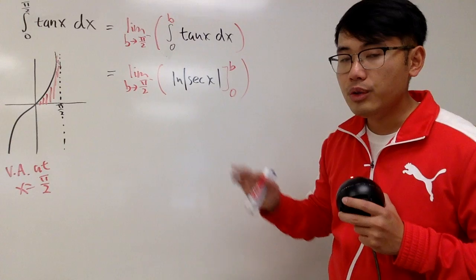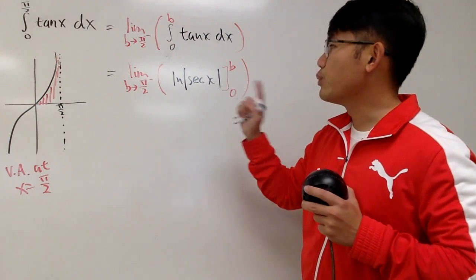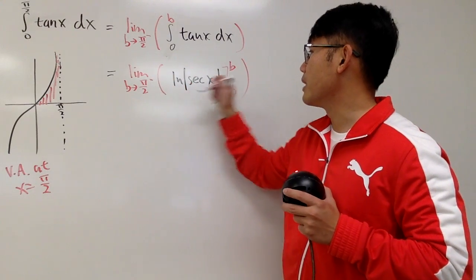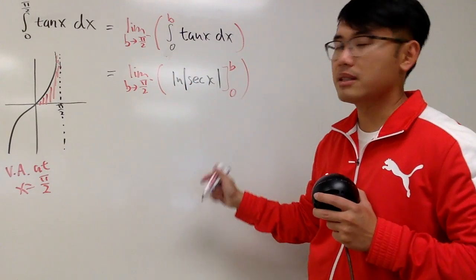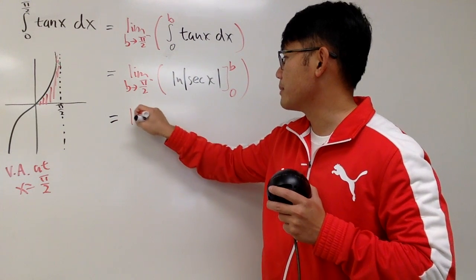And, technically, you don't need absolute value, because this and that will be positive anyway. Right, when you plug in B, when you plug in 0, you'll be positive. But, if you have the absolute value, it's not wrong. So, it doesn't matter.